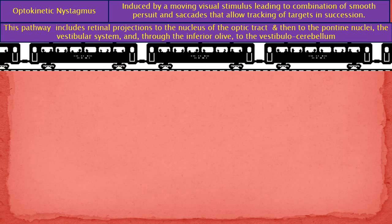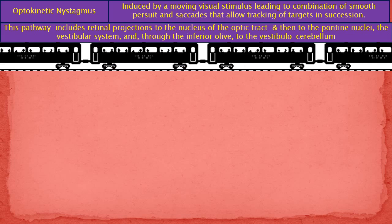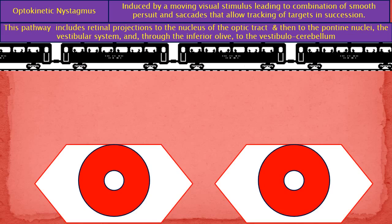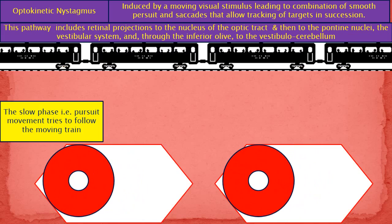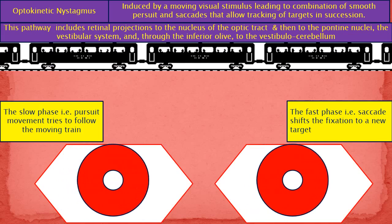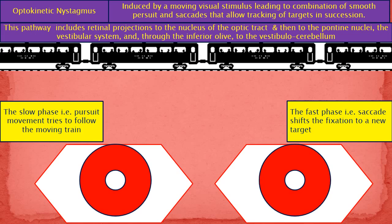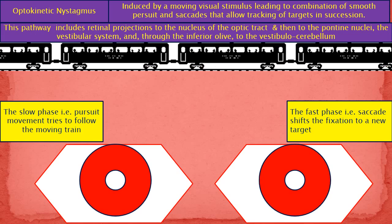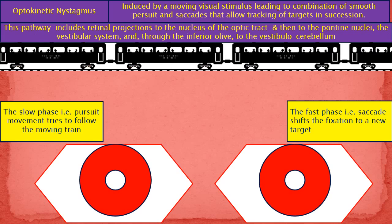If you are standing on a platform and looking at a moving train, the slow phase — that is the pursuit movement — tries to follow the moving train, and the fast phase — that is the saccade — shifts the fixation to a new target.